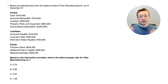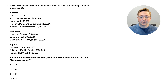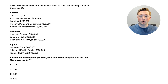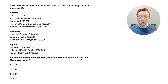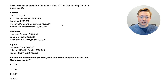Here we are at question one. Something that we always like to recommend when you're doing questions, especially calculation questions, is reading the last part of the question to know what you're really looking for. So we read this last part first: based on the information provided, what is the debt-to-equity ratio for Titan Manufacturing Co.? We know we need to calculate the debt-to-equity ratio with all of this information, so some of this information may be irrelevant.